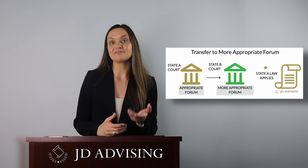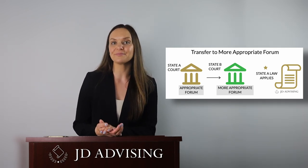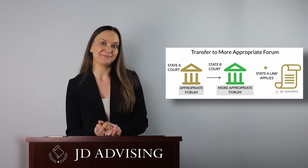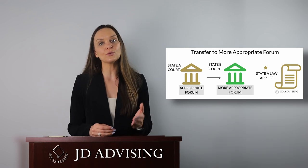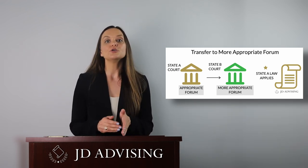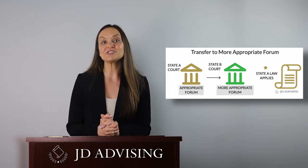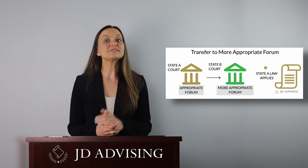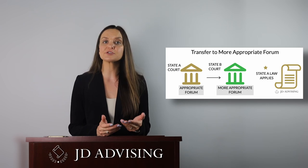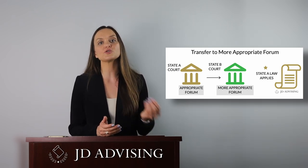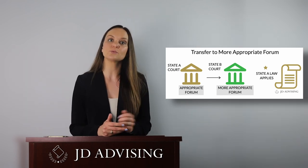Another way the examiners like to test Conflict of Laws with civil procedure is transfer to a more appropriate forum. This is tested frequently when venue is tested. So under the law, transfer for a more appropriate forum is that the federal court has the authority to transfer a case to another federal district court for the convenience of the parties and the witnesses in the interest of justice. The new court must have subject matter jurisdiction and personal jurisdiction. When transfer happens pursuant to this rule, the new court will apply the law of the transferor forum. The transferor forum is the place where the case was originally filed.